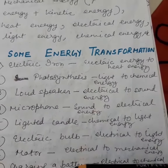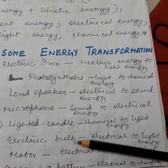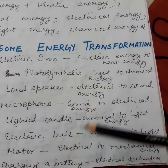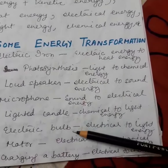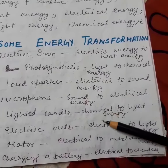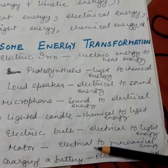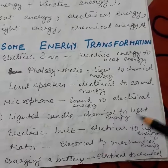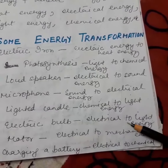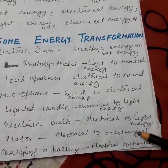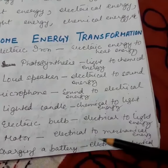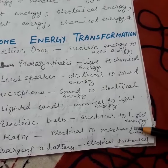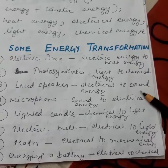Example four: microphone — sound energy is converted to electrical energy. Example five: a lighted candle — candle is made up of chemicals, so wax provides chemical energy which is converted to light energy. Example six: electric bulb — electrical energy is converted to light energy. Example seven: motor — electrical energy is converted to mechanical energy. Example eight: charging a battery — electrical energy is converted to chemical energy.